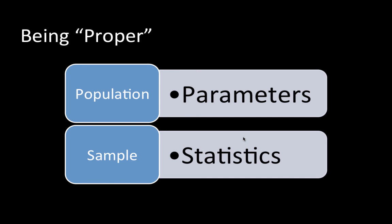The 10,000 people chosen are the sample; the complete population of people in the country is the population. We make measurements on the sample and infer measurements about the population. When you measure things on the entire population, they are called parameters. If you take every earning individual in the US, find their income, and compute the average, that is a population parameter — there is no uncertainty about it. If you take a sample and calculate the average of that sample, that is called a sample statistic, and a sample statistic is used to arrive at an estimate for the population parameter.